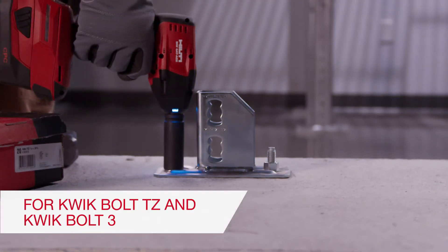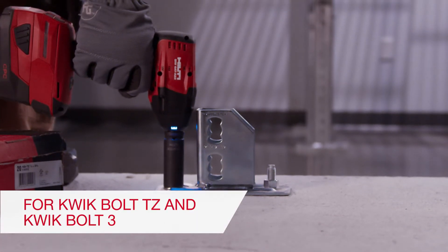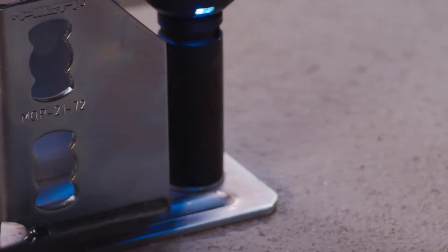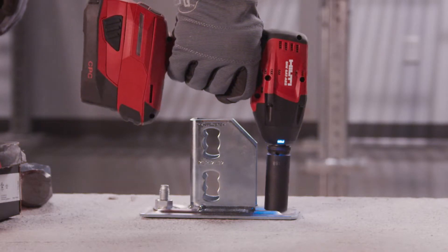The adaptive torque, or AT system, is designed to help you install Quick Bolt TZ and Quick Bolt 3 more productively. It also helps avoid the problems of over or under torquing anchors.